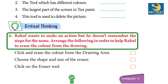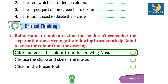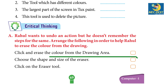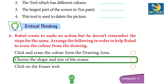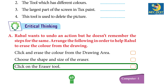Critical thinking: Rahul wants to undo an action but doesn't remember the steps. Arrange the following in order to help Rahul erase the color from the drawing: Step 1 — Click on the eraser tool. Step 2 — Choose the shape and size of the eraser. Step 3 — Click and erase the color from the drawing area.